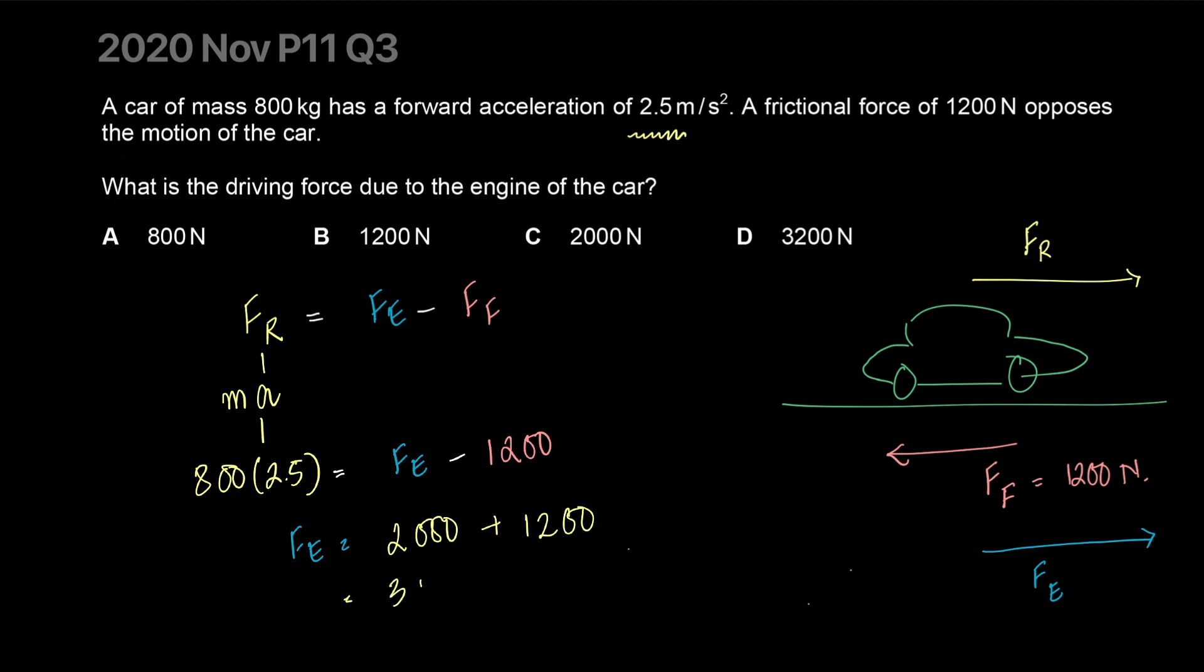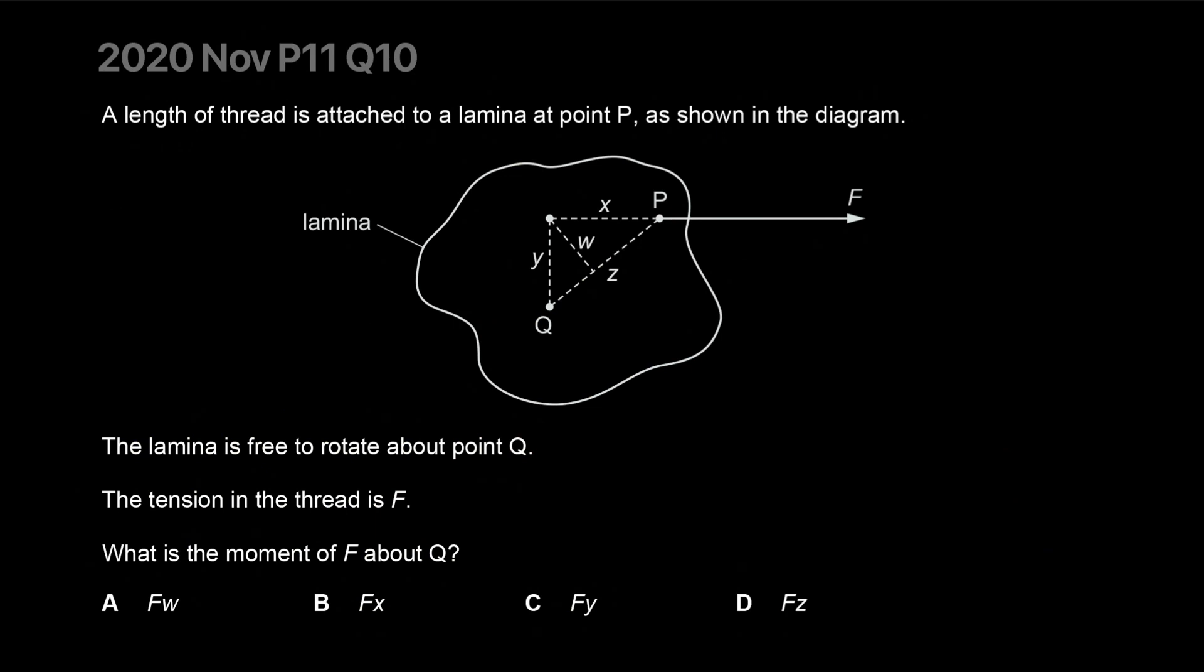One easier way of narrowing it down is that the engine's force has to be at least higher than the friction, because the car is moving forward. If the friction was equal to the forward force generated by the engine, if they were both 1200, the resultant force would be zero and the car wouldn't move. Since it's moving forward, the engine force is higher than the friction force, so B and A were already ruled out. The correct answer is D.